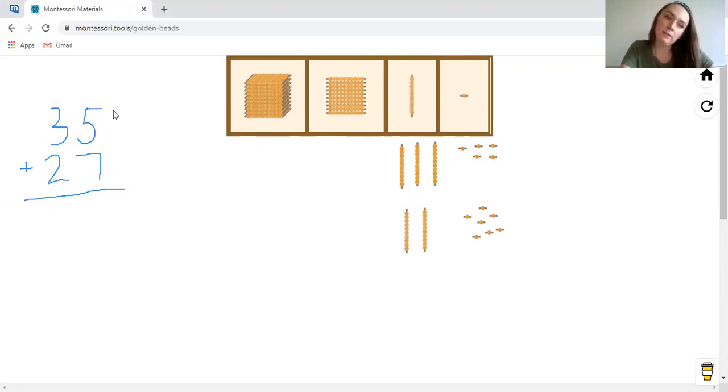So when we're adding, we're going to always start on our unit side, right? So we're going to have seven plus five. Let's just go ahead and drag these down and count them out. One, two, three, four, five, six, seven, eight, nine, ten. And when we get to 10, we stop, right?